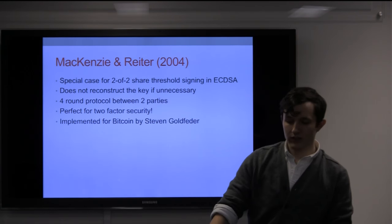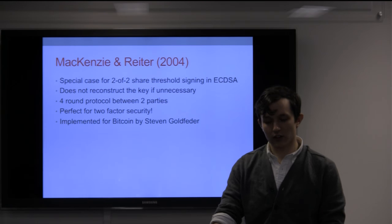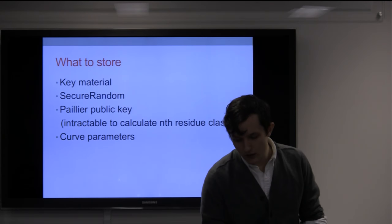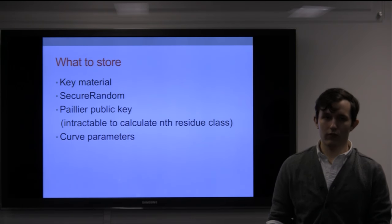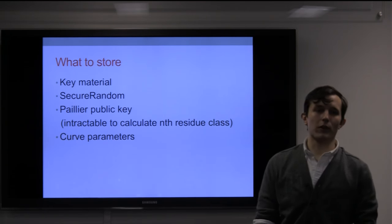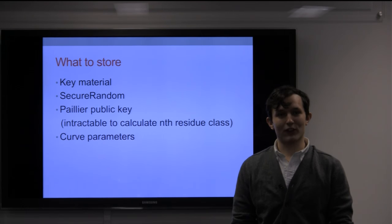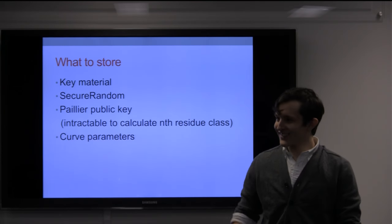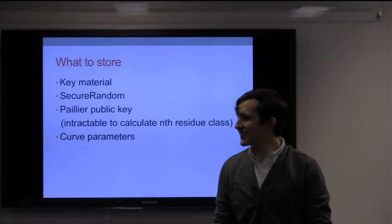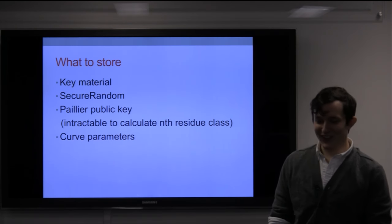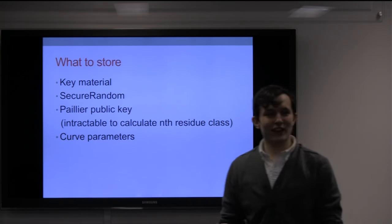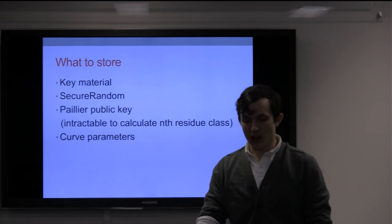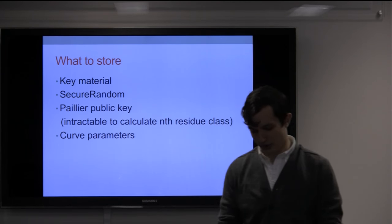Another interesting scheme that this project worked with is MacKenzie and Reiter, who came up with an interactive four-round protocol where it's just two parties. One party initiates a message, which in this case is a Bitcoin transaction. I do a partial sign, pass it off, they do a partial sign, and it goes back and forth one more time, and then you have a properly signed ECDSA message without ever reconstructing the key on a device. For each round, you need to store your portion of the key material, a secure random number generator, a Paillier Public Key, which is a crypto system based on the idea that it's intractable to calculate the n's residue class of a number, and then curve parameters and other large integers used for intermediate calculations.